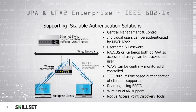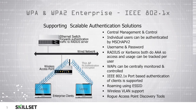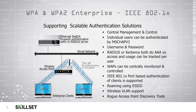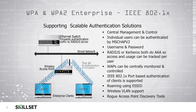When a laptop or other wireless device connects to the wireless access point, the access point is not responsible for doing any authentication or encryption. It simply forwards the traffic to the RADIUS server, which is responsible for authenticating the user. Once the user successfully authenticates, they are then connected to the corporate network where they have access to corporate resources and the internet.